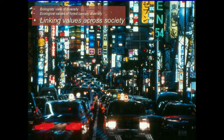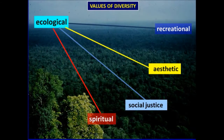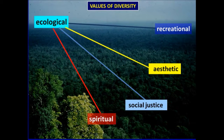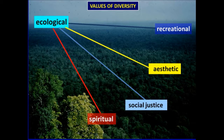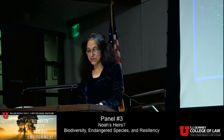During the last decade, I've been linking values across society — taking the ecological values of diversity that concern forest canopies and trees and presenting them to other communities within our society, in an effort to allow them to share a sense of the importance and value of diversity. I'd like to give you some examples of each of these four areas: the recreational values of trees and forests, aesthetic values, social justice values, and, of course in this symposium, spiritual values.